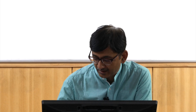Basically, when you apply a shear stress, there may be a source emitting dislocations. When you are applying a shear stress like this, the dislocations will move, and when they encounter a barrier, the grain boundary is a very strong barrier.